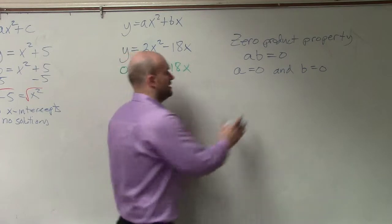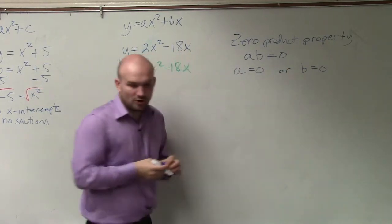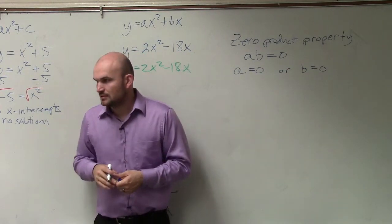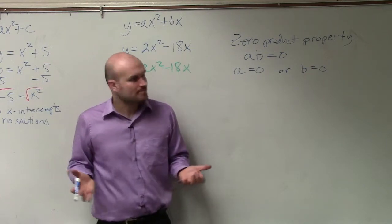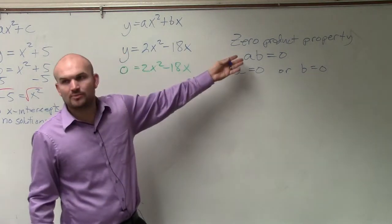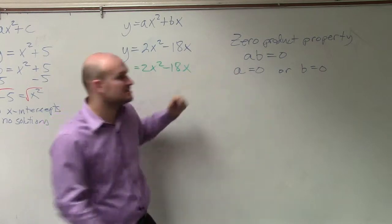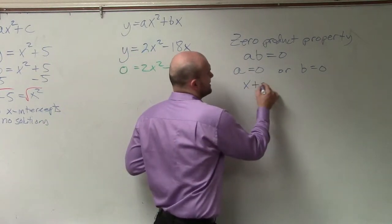No, not and, or. One or both has to equal 0. Right? Right. Now, what's important about the zero product property, this doesn't just work for numbers. This also works for expressions.